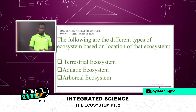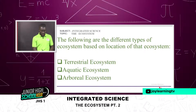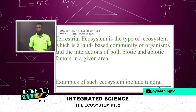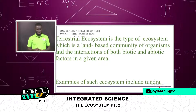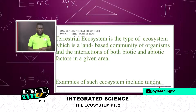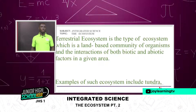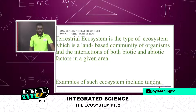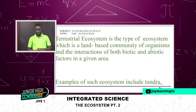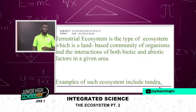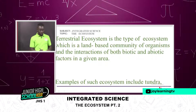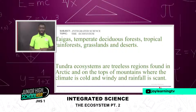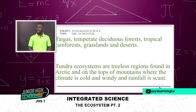A terrestrial ecosystem is a type of ecosystem which is a land-based community of organisms and the interactions that exist between both biotic and abiotic factors in a given area. Examples of terrestrial ecosystems include tundra, temperate deciduous forest, tropical rainforest, grassland, and desert. All these are sub-ecosystems located under the broader terrestrial ecosystem.